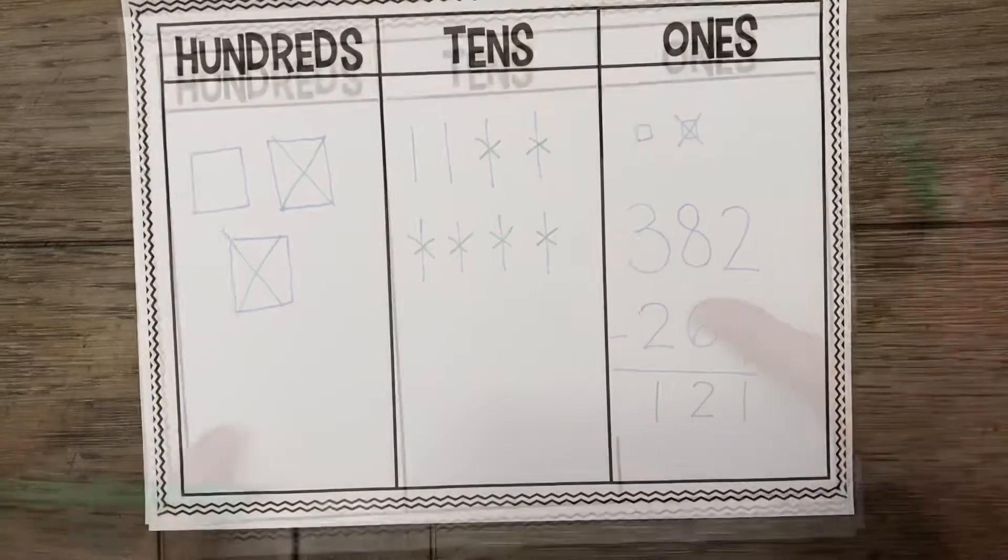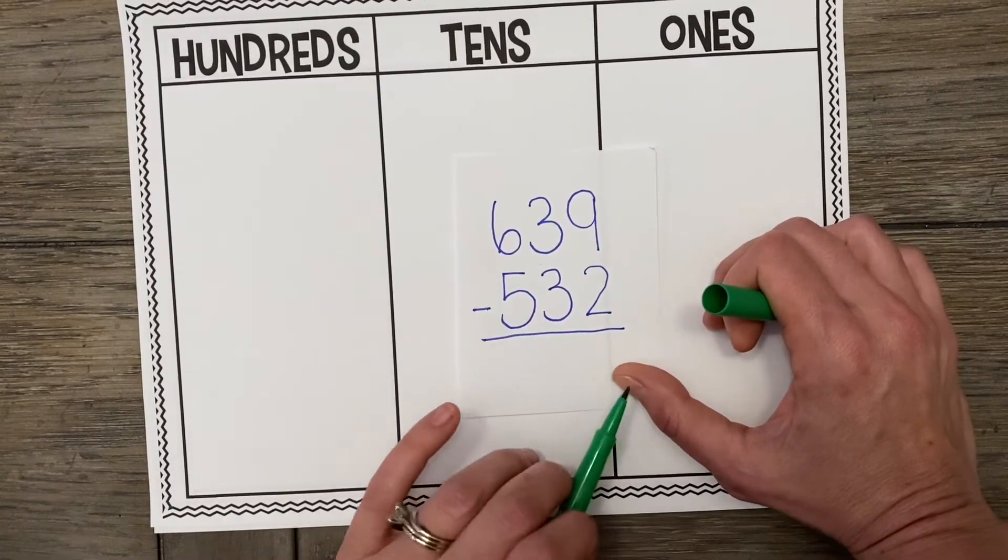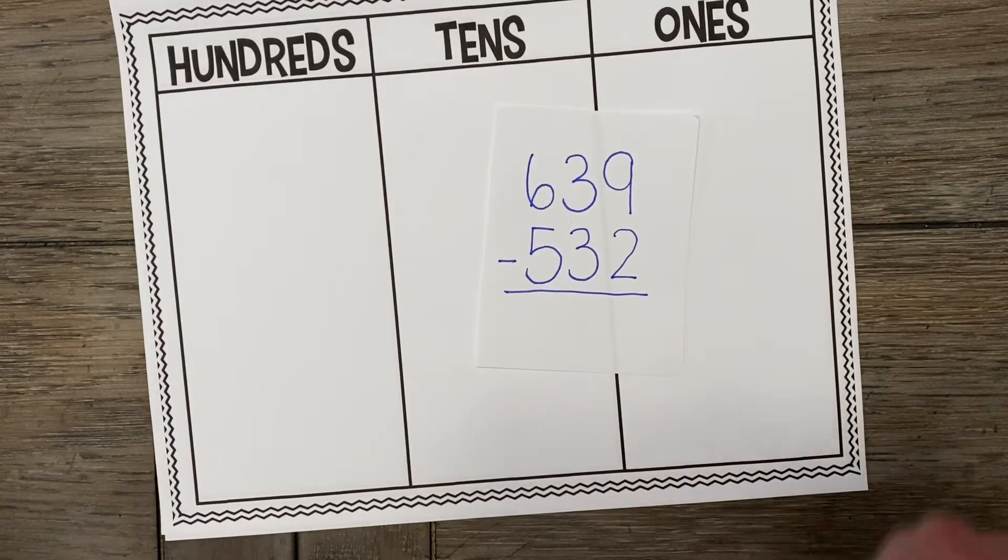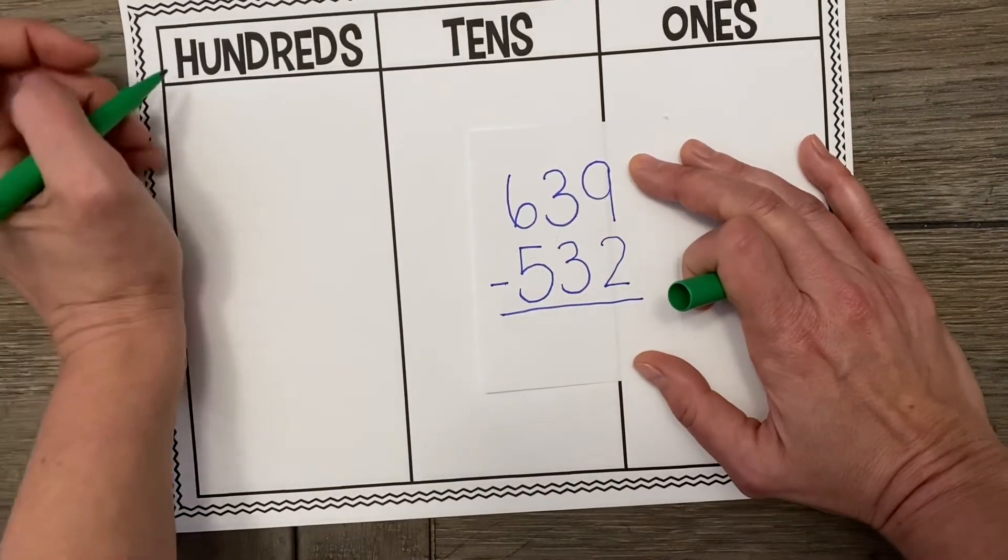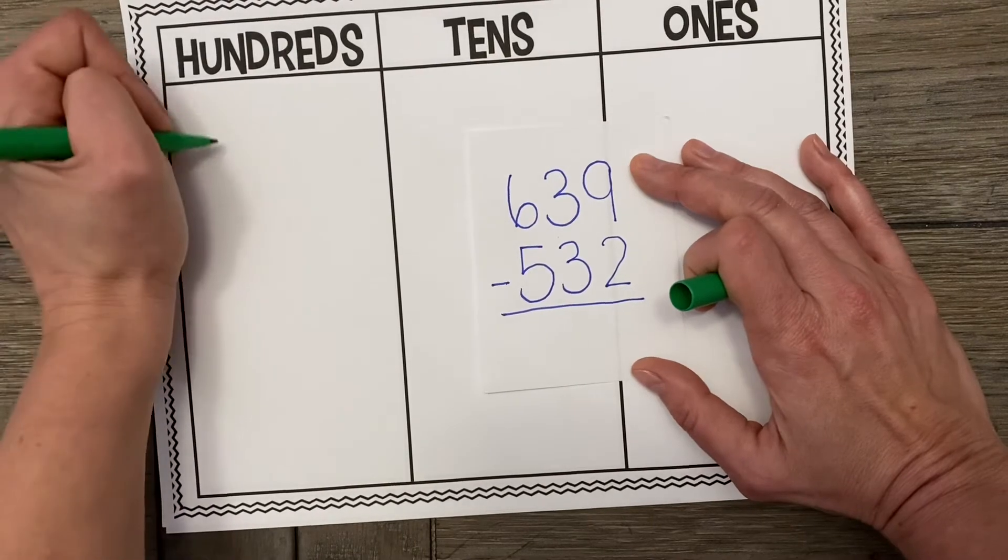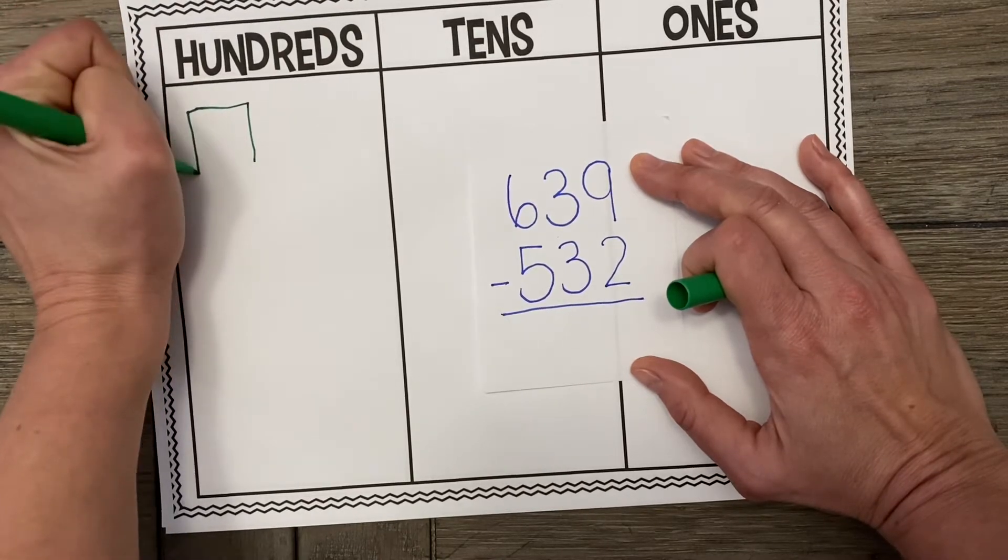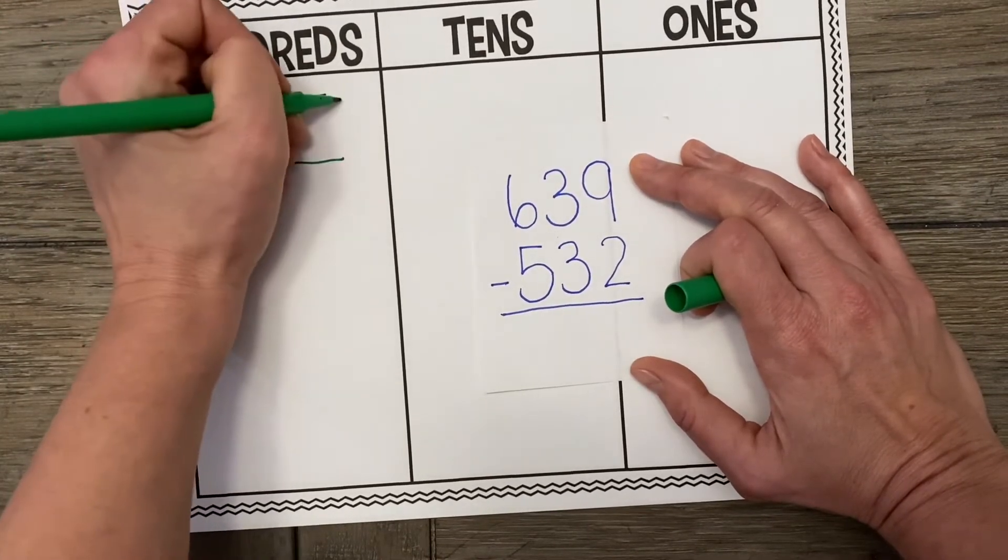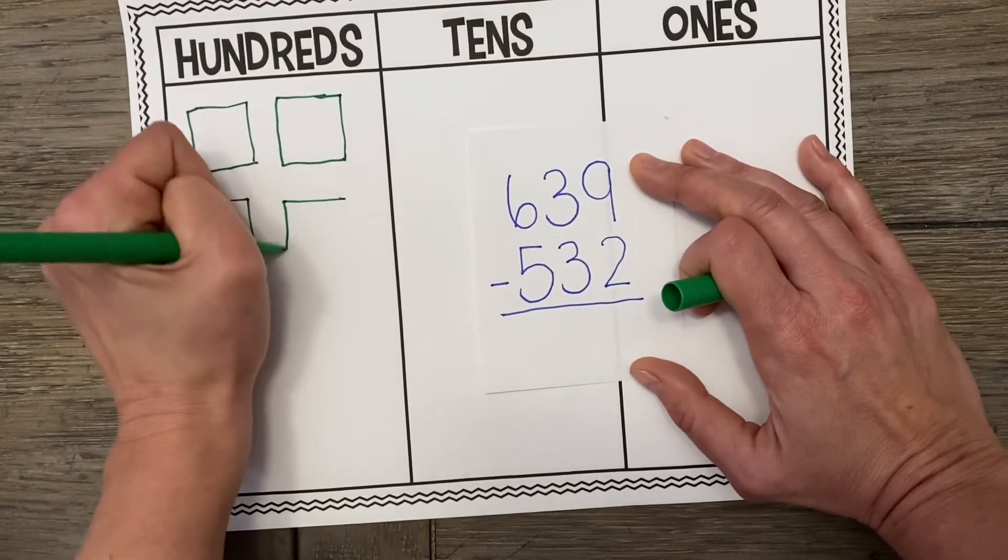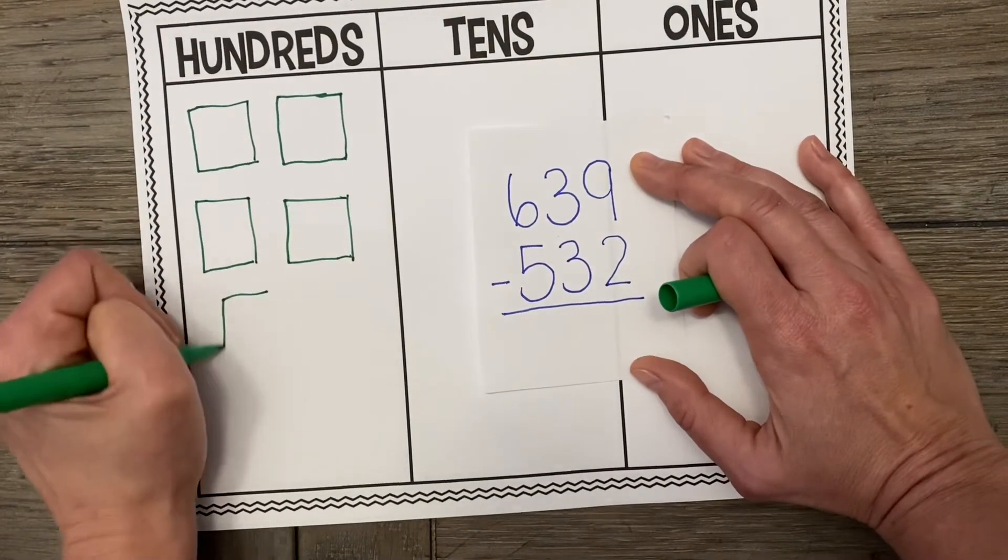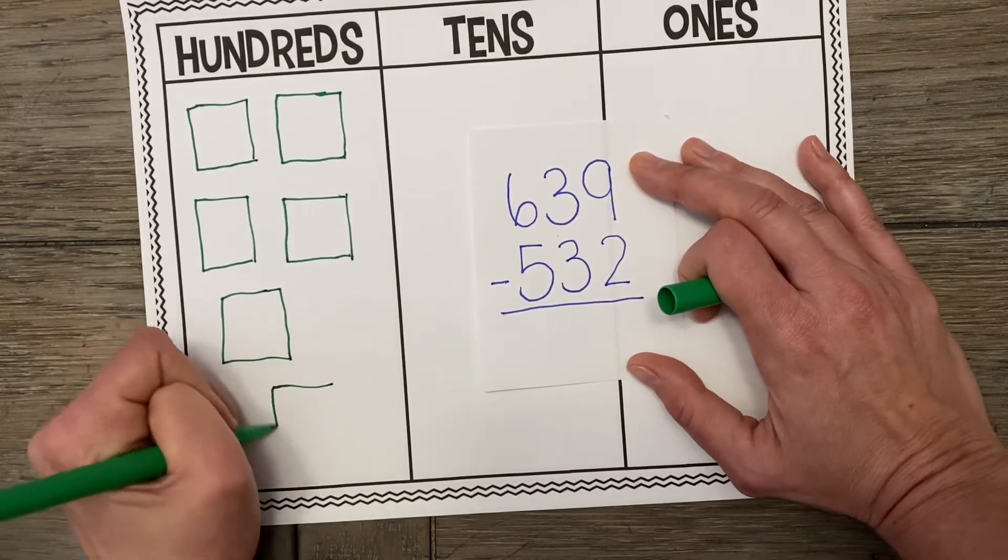Let's try another one. Now we're going to try the math problem 639 minus 532. Alright, so remember, we're only drawing out our top number because we are taking away, not adding to. So I'm going to start with my 100s and draw 6 big 100 squares. 1, 2, 3, 4, 5, and 6.